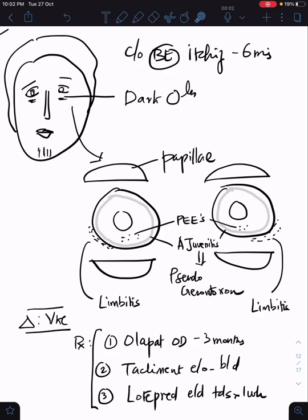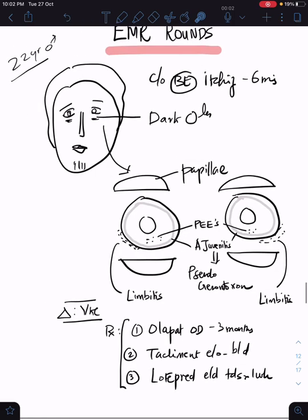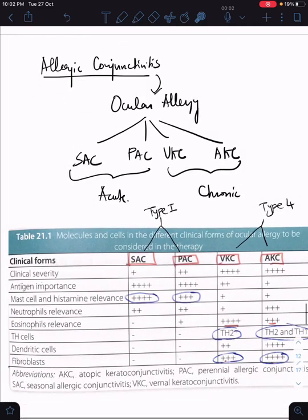I referred this patient to cornea and they started him on olopatadine OD, tacrolimus eye ointment, and loteprednol eye drops TDS for one week. So this is going to be our case. I want to focus the discussion more towards the treatment aspect. Most of us know what the features of VKC are, but let's talk about the treatment of allergic conjunctivitis in general.